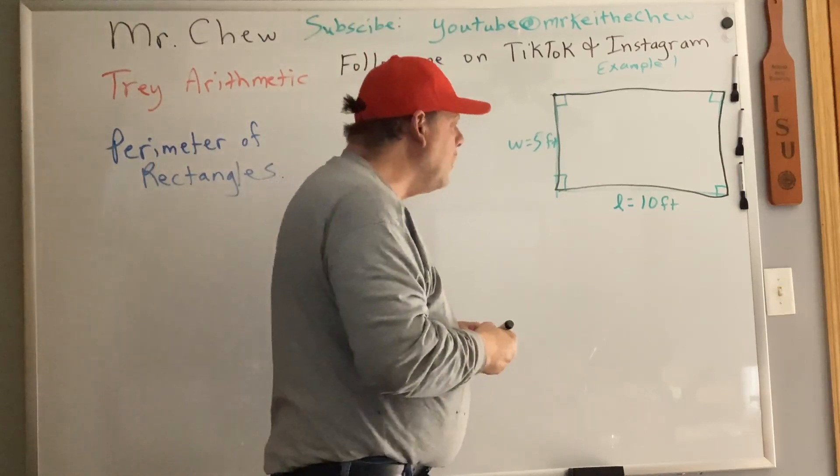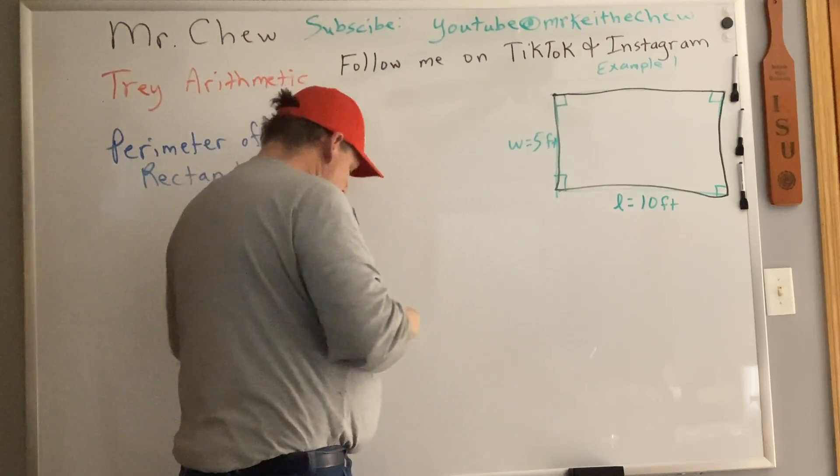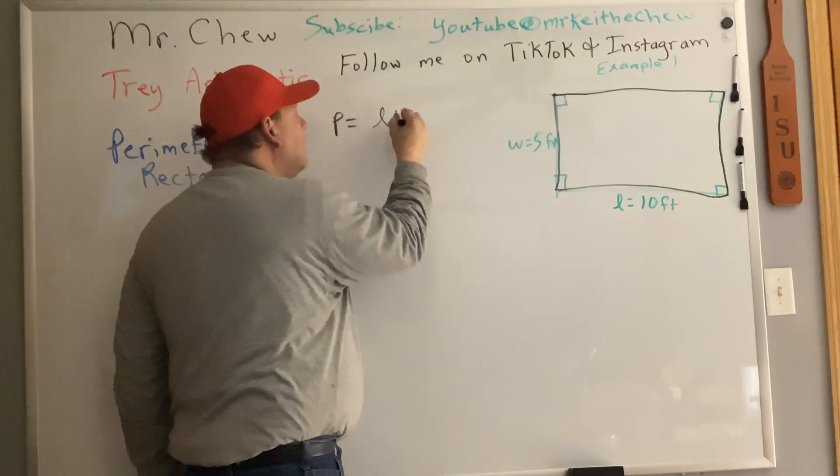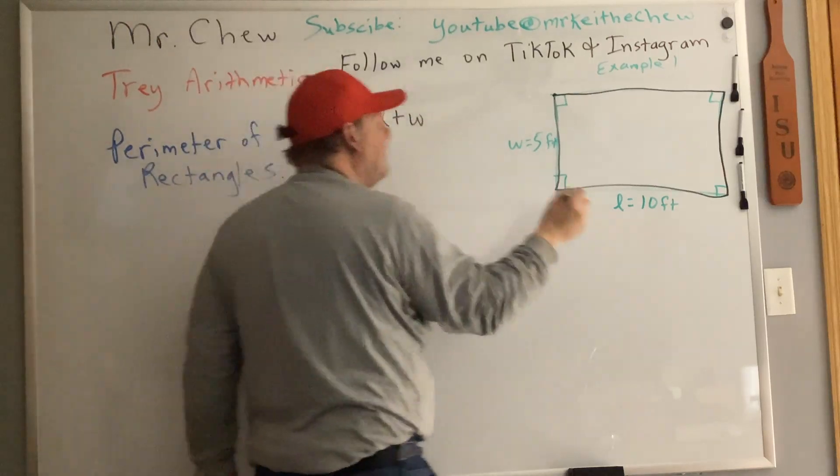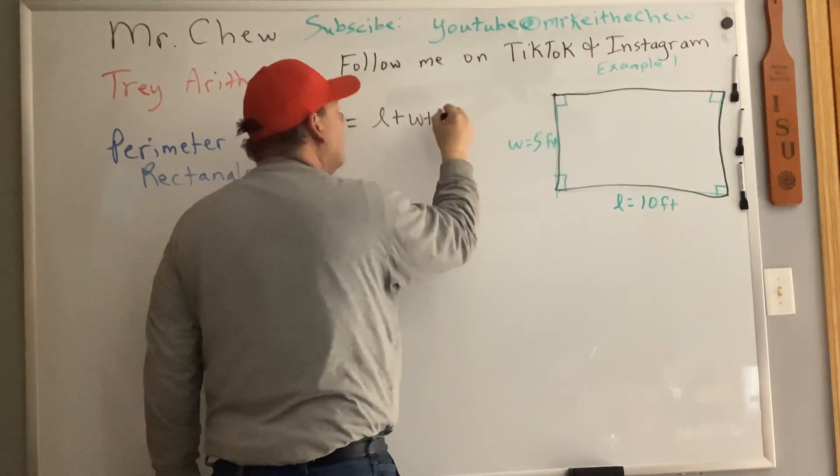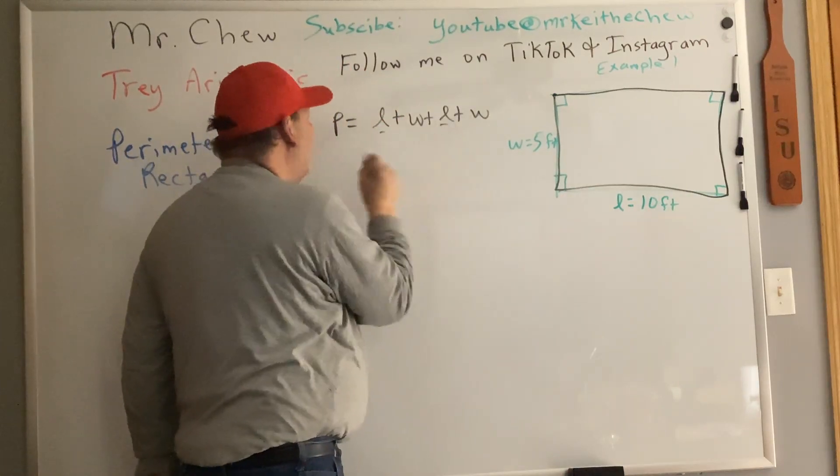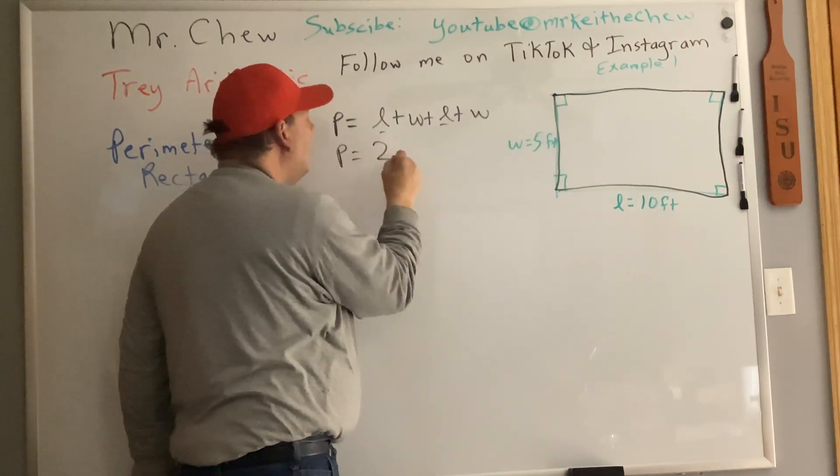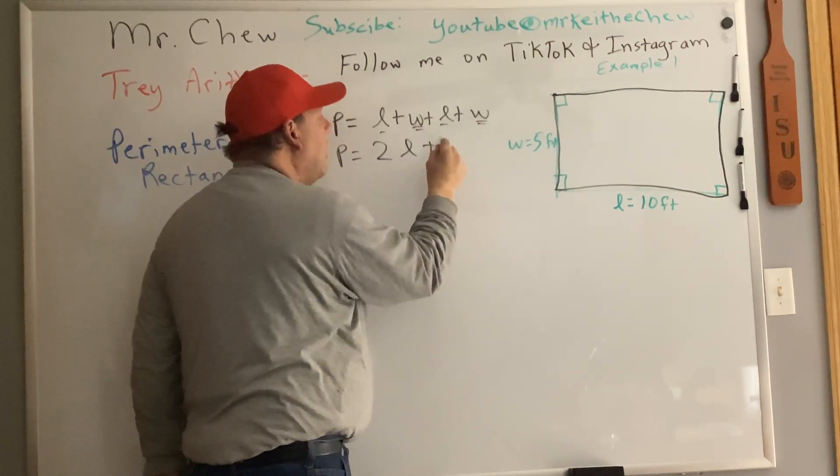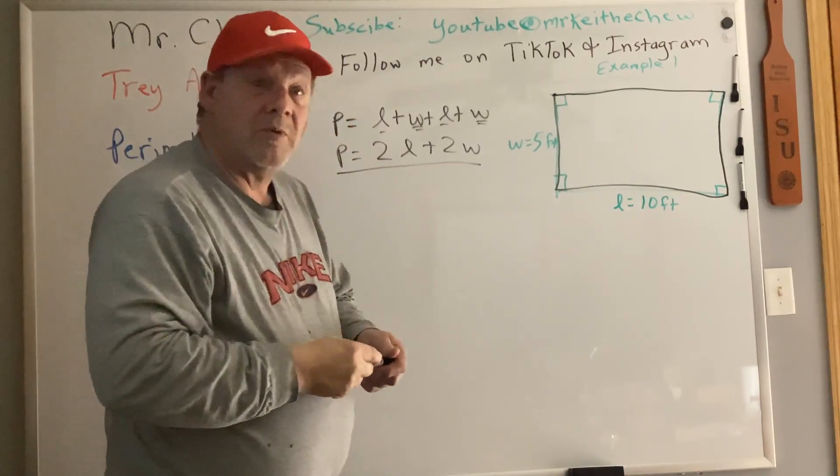So we could take and say that perimeter is the length plus the width. We've got our length here, we've got our width here, we've got a length here and we've got a width here. We have like terms here of L and like terms of W and this is our shortcut formula and that's the formula I want to use.